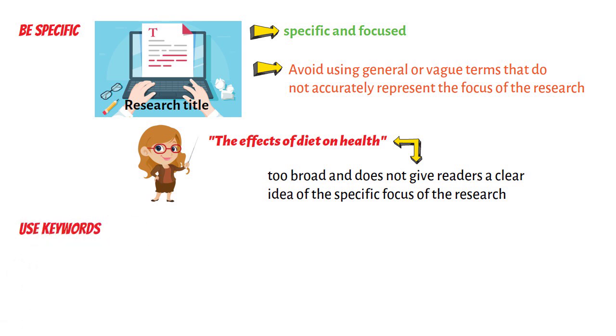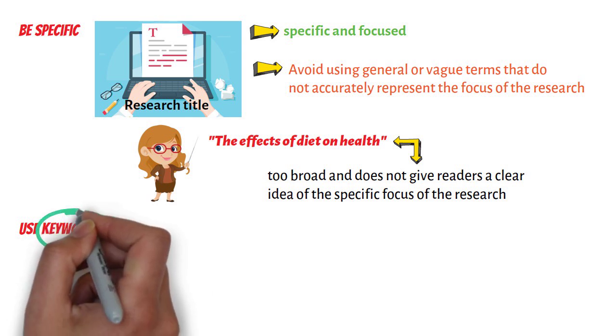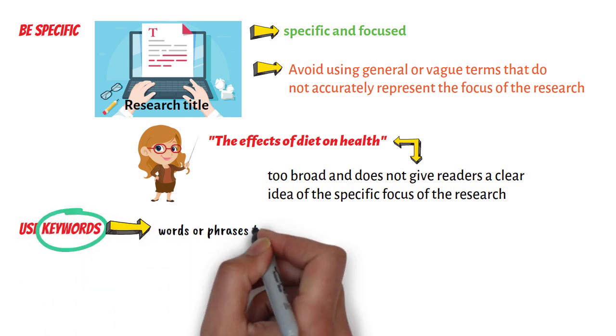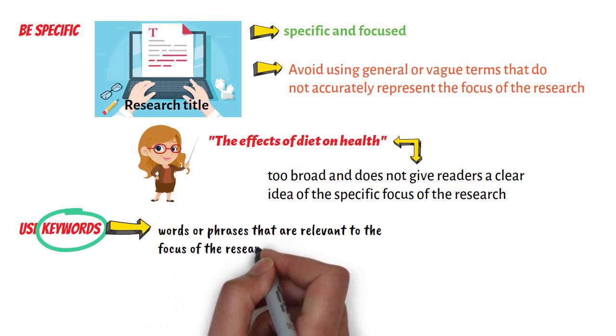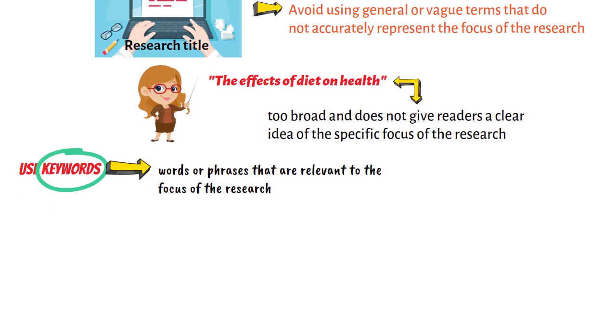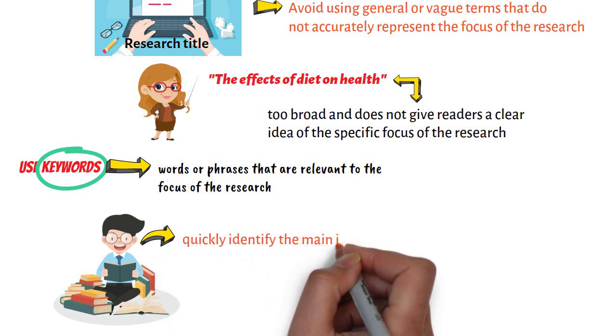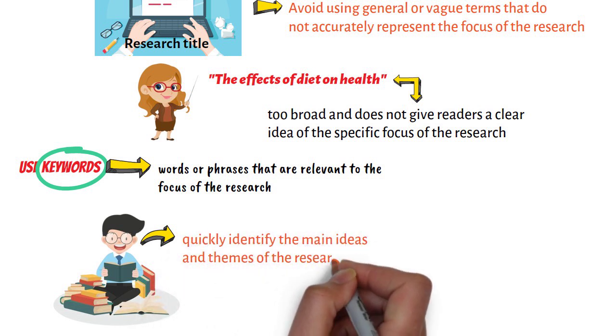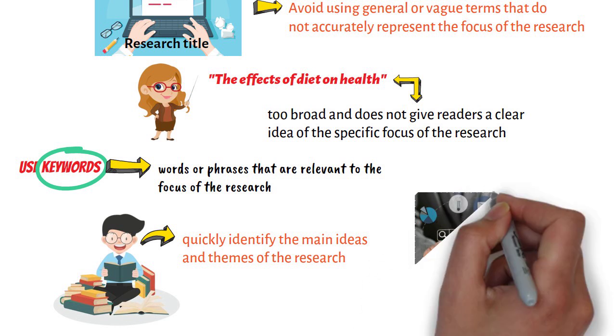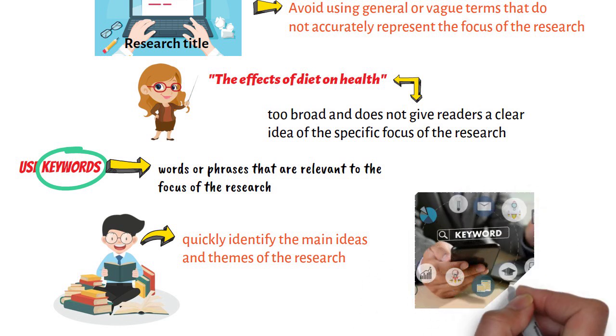Fifth, use keywords. Keywords are words or phrases that are relevant to the focus of the research. They help readers to quickly identify the main ideas and themes of the research. Incorporating keywords into the research title can also help to improve search engine optimization, making the research more discoverable online.